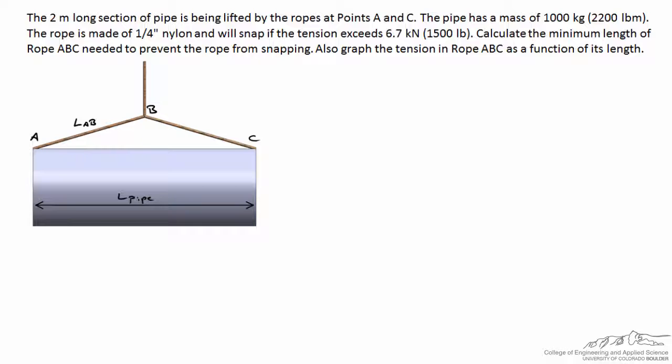So with A, B, C as considered before, the shorter that length of rope is, the less vertical component of tension we'll have and the higher the force. We want to figure out the minimum length of rope ABC, in addition to graphing the tension in that rope as a function of its length.